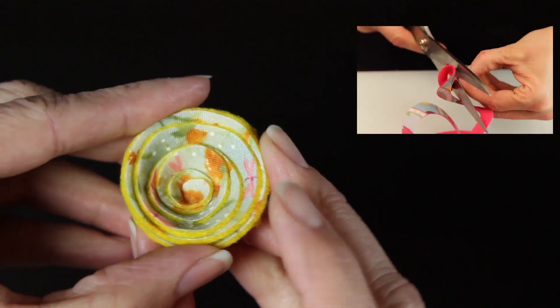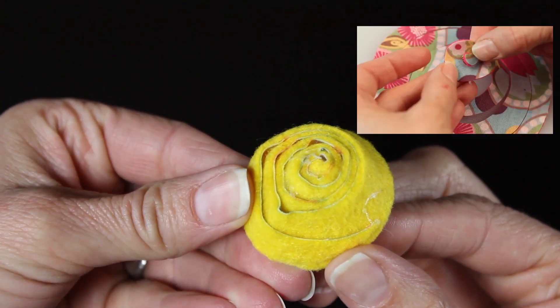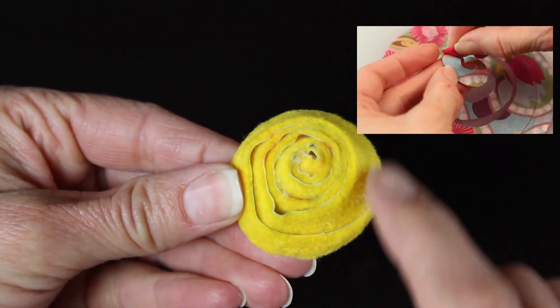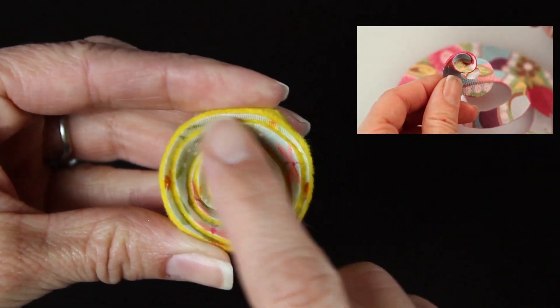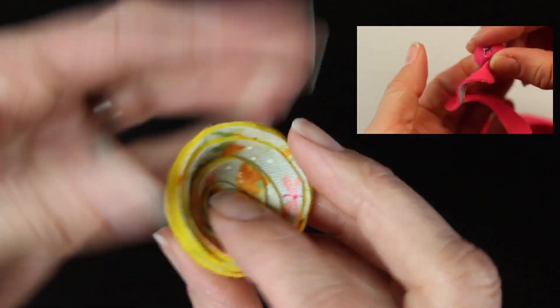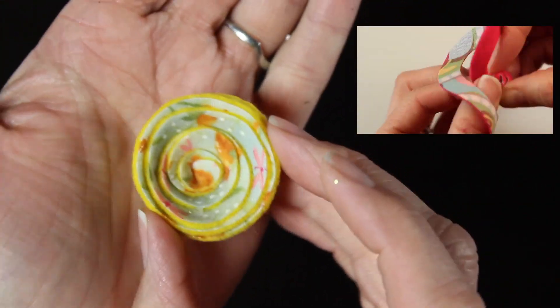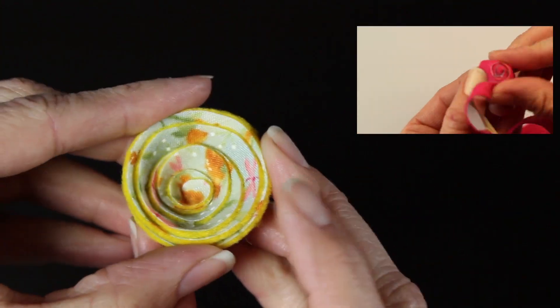Now the first thing you're going to need is a rolled flower. To learn how to make these, please click on the video in the upper right hand corner. You can just click on the video and it will take you to a tutorial where I show you step by step how to make these sweet little flowers.